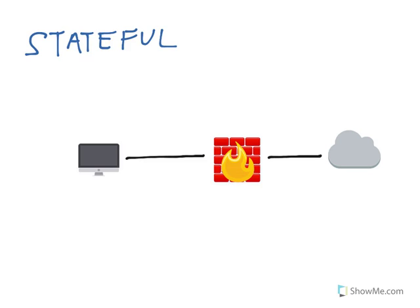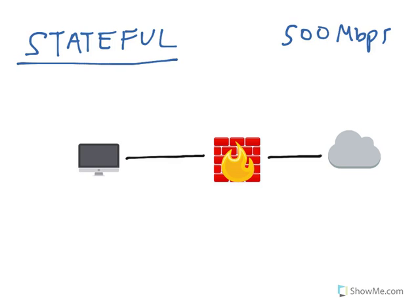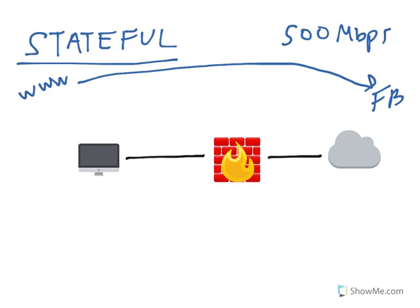Another common performance figure in datasheets is the stateful performance. Let's assume that the datasheet says we have 500 megabits per second of stateful performance. What does this mean? Imagine we have a client on the left accessing a website. We issue an HTTP GET, it traverses the firewall, reaches facebook.com, the web server replies, and then the website is displayed on the client's browser.